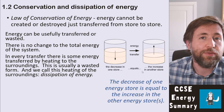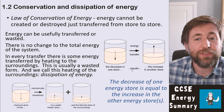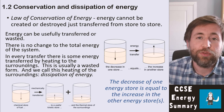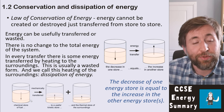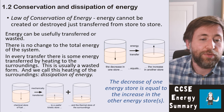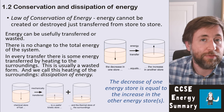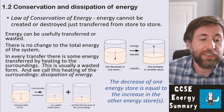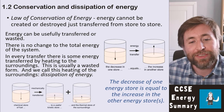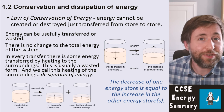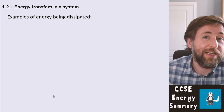In reality, energy doesn't just go from one store to another — there is always a little transferred to heating of the surroundings. For example, in a car, the chemical store of the fuel is mechanically transferred into a useful kinetic store and the thermal store of the surroundings. The decrease of the starting store equals the increase of all the final stores combined. We can't avoid dissipation, but we can limit it.